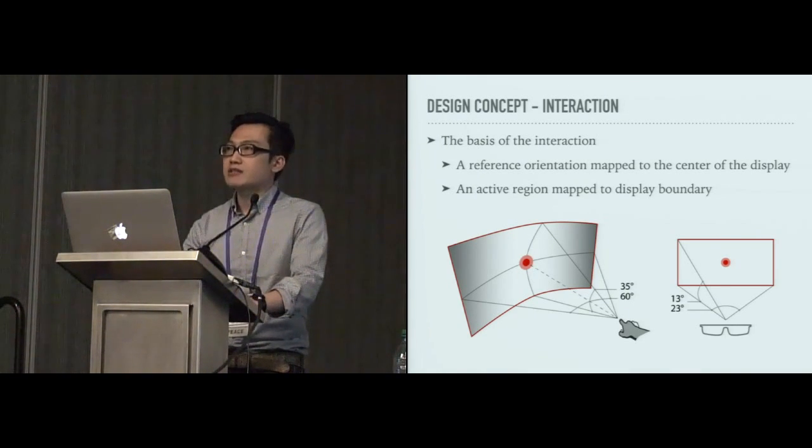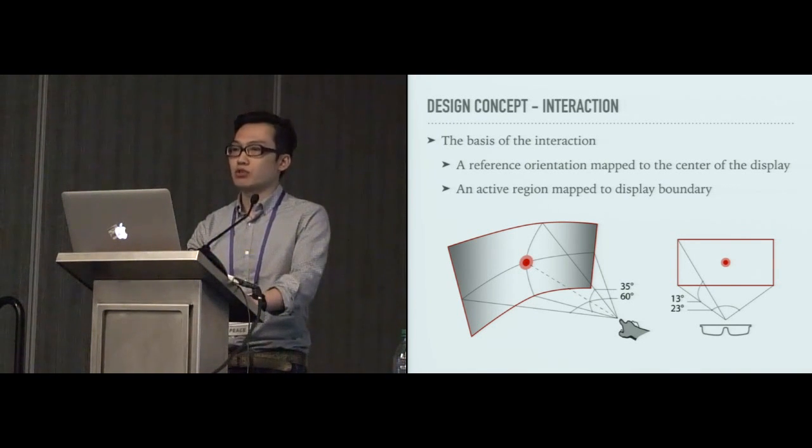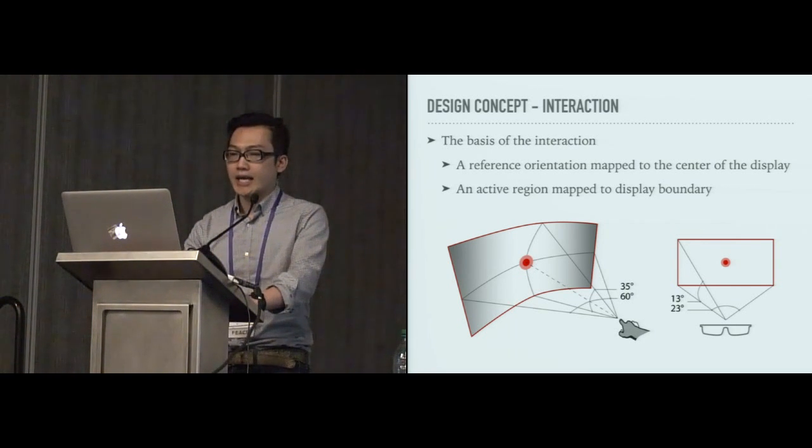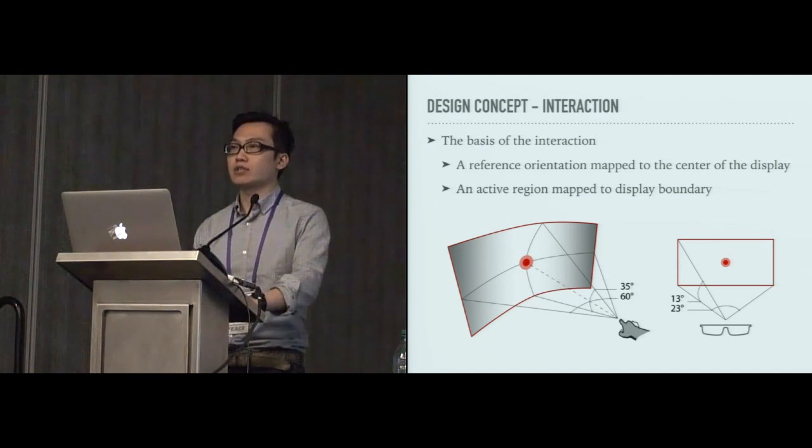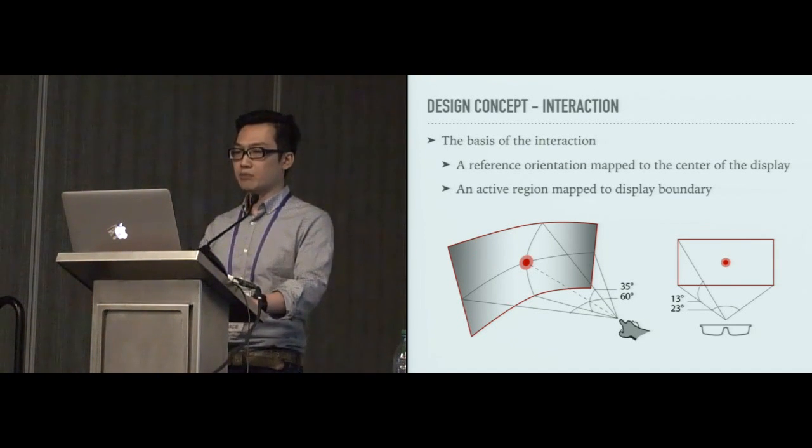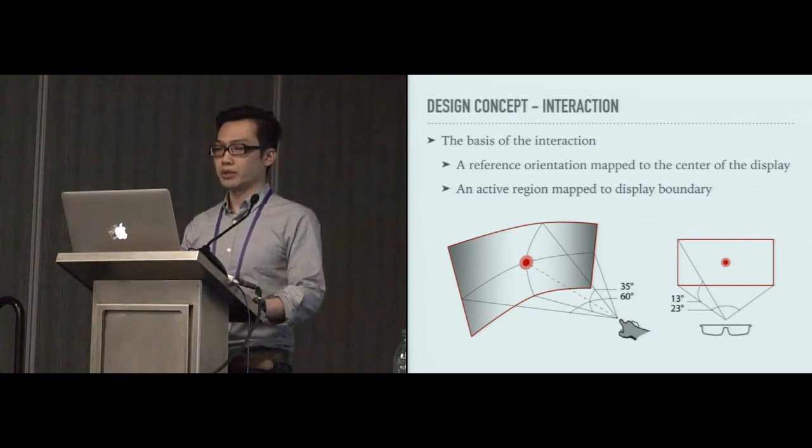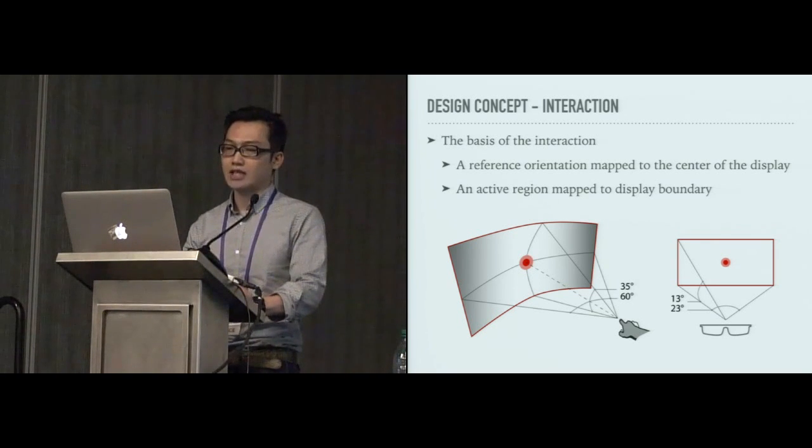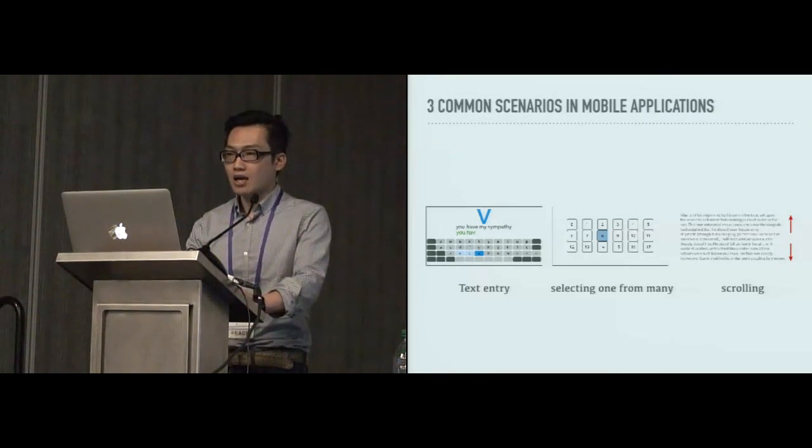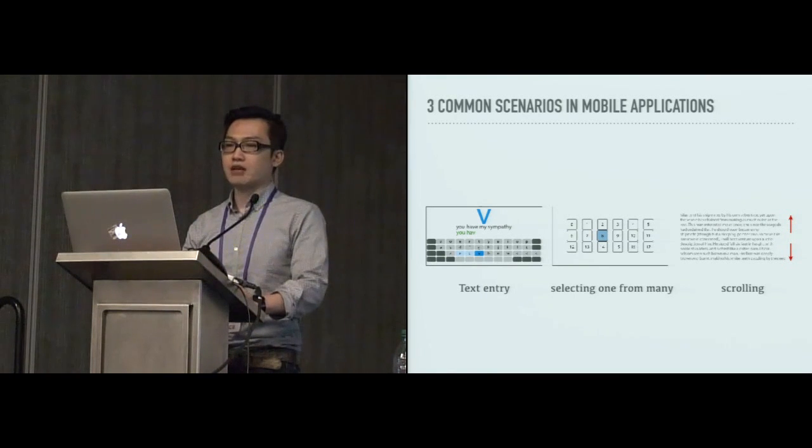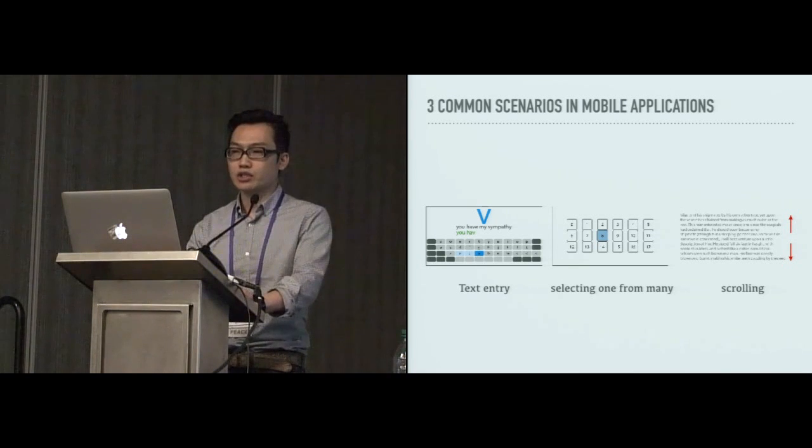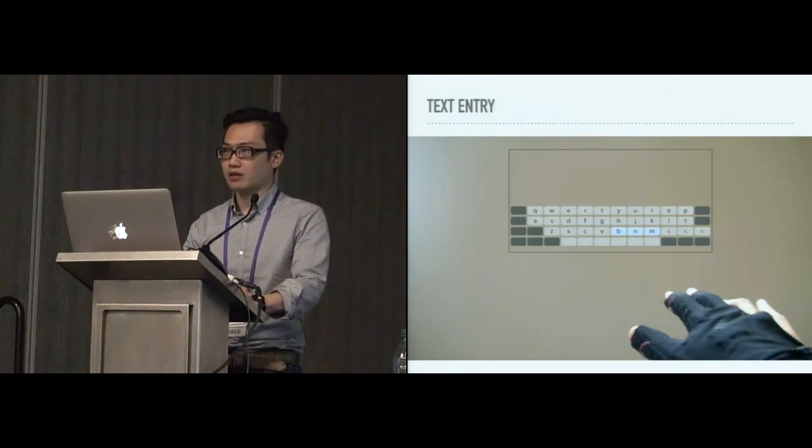The basis of this interaction is built on mapping a reference orientation to the center of the display, and active vision can be defined accordingly. This technique allows users to set a reference orientation in any pose freely, which enables the gesture to be performed in a comfortable and less obtrusive pose, and it's easy to adapt to various conditions. I'll introduce three common scenarios that we developed, and they're quite common in mobile applications: text entry, selecting one from many, and scrolling.